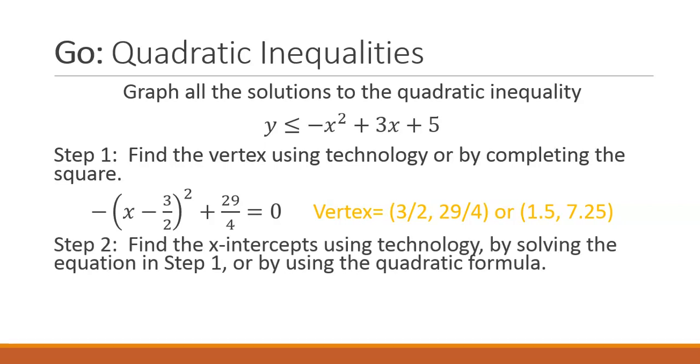Step 2 we should find the x-intercepts using technology by solving the quadratic equation in step 1 or by using the quadratic formula. We find that the x-intercepts are negative 1.193 comma 4.193.